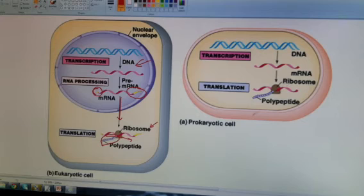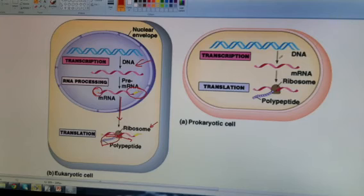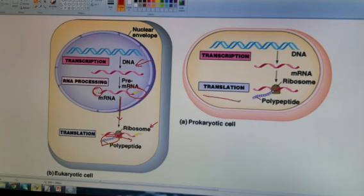In a prokaryotic cell, there is no RNA processing. Once the RNA is made, you can pretty much start translation right away. So it's very simple in prokaryotes, with a little bit more processing required in eukaryotes.